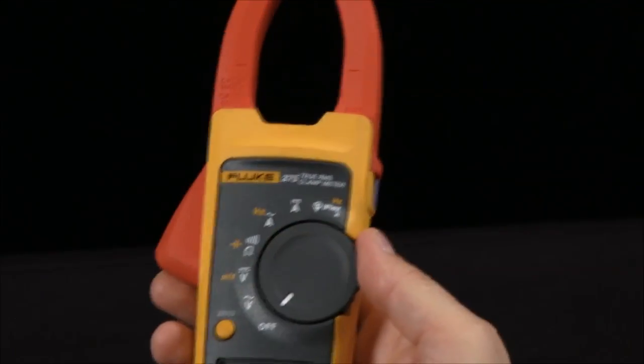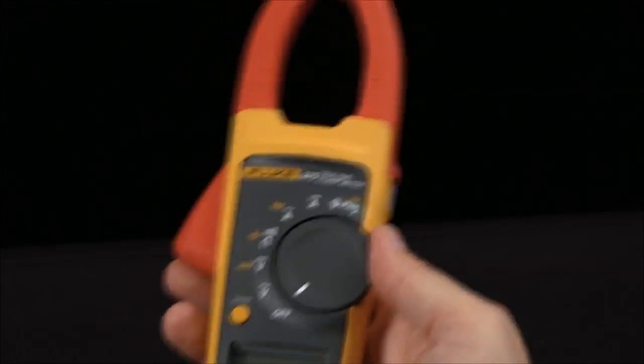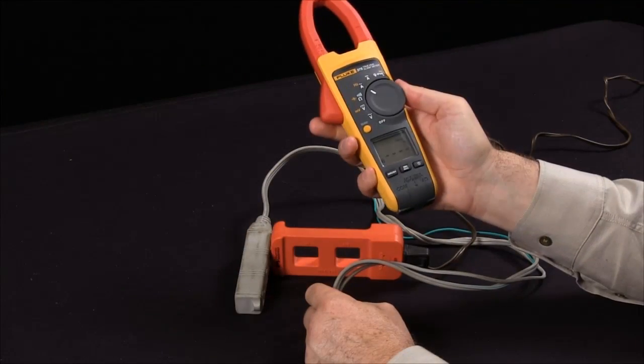How do I measure the current flow going through a power cord and out to a load? Let's set the clamp meter to read AC amps.